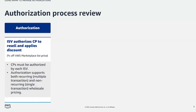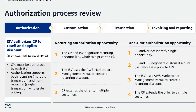When an ISV authorizes a consulting partner to resell their software, they have the option to create different types of authorization opportunities. The ISV determines whether the authorization opportunity is recurring or is available for one-time use. When creating a recurring authorization opportunity, an ISV authorizes a consulting partner to resell their product or products at an agreed-upon wholesale discount, enabling the consulting partner to create multiple private offers for multiple customers as long as the recurring discount is active.